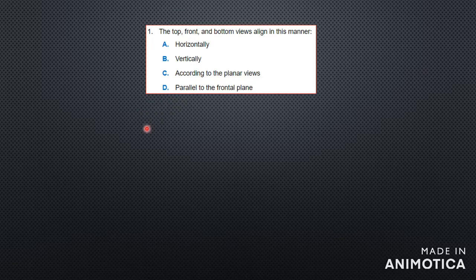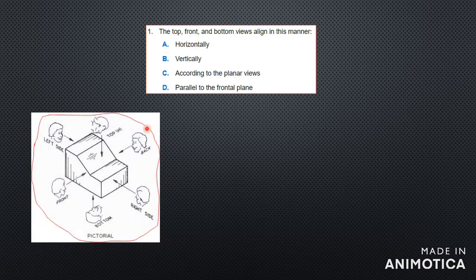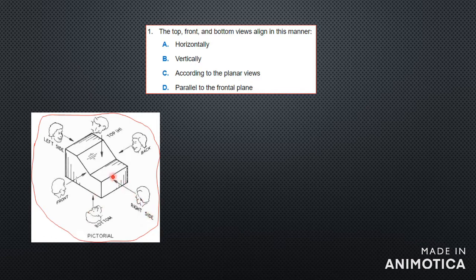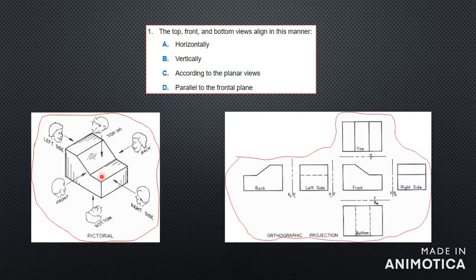Parallel to the plane means parallel to the plane it is being projected onto. If you have a 3D object, you have six views: the top view, the back view (which you won't see in real life), the left side, the front (which you can see), the bottom (which you can't see), and the right side — six different views of the object.